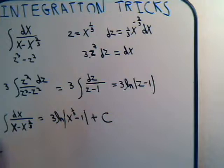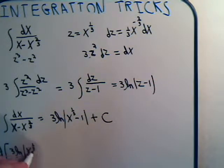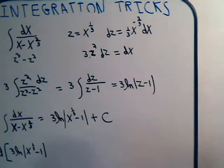So we want to take the differential of 3 times the natural log of x to the one-third minus 1. And the differential of that is going to be 0.